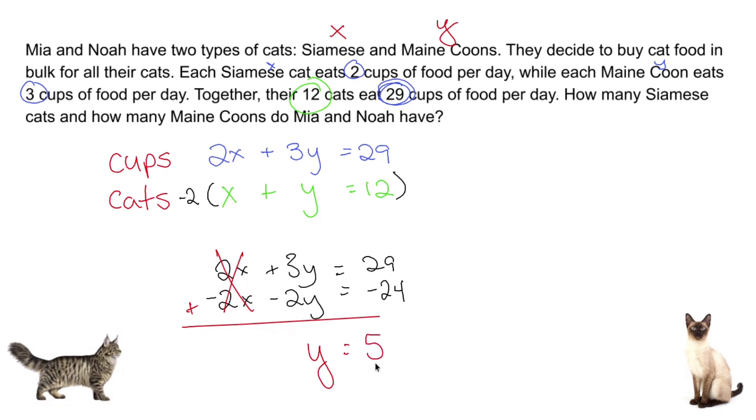Now Y is 5. I have to find my X, and I'm going to use the green equation to do it. So I'm going to rewrite the bottom equation and replace Y with 5. I'm going to subtract 5 from both sides, and X is going to equal 7.